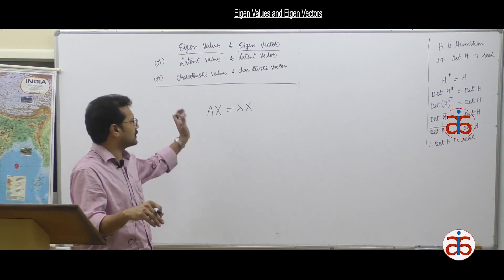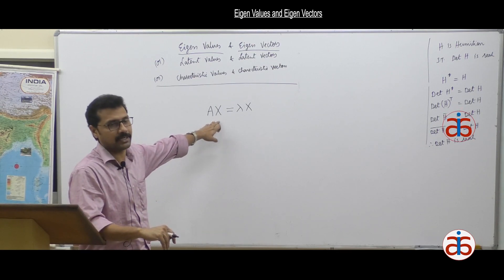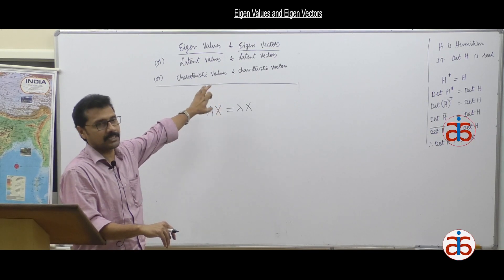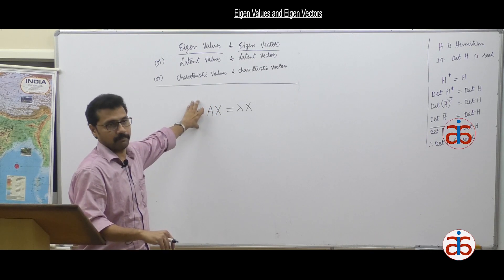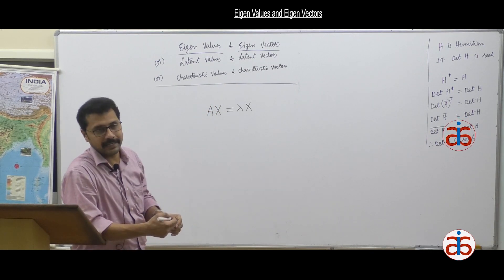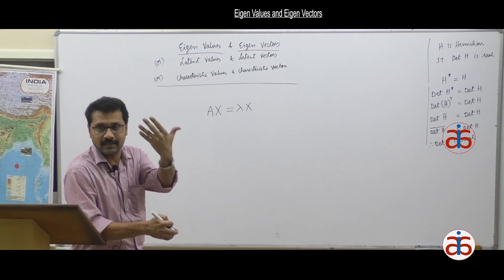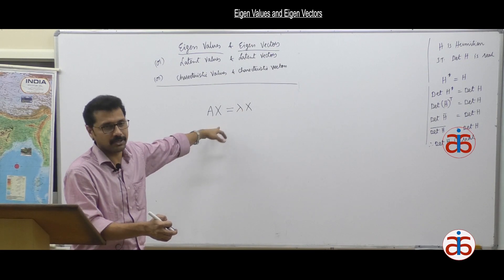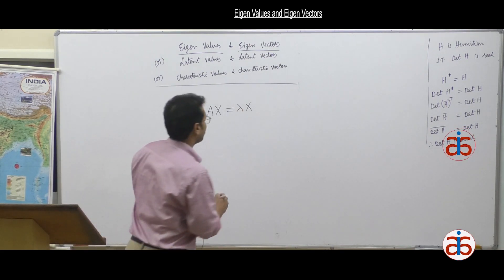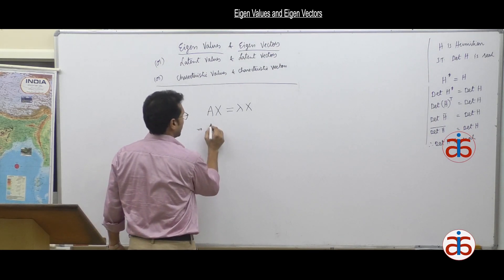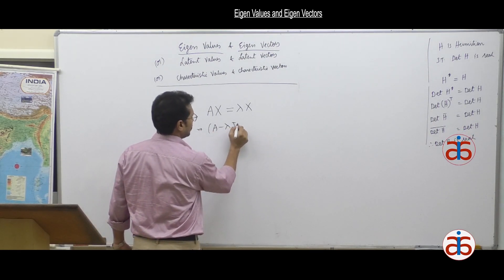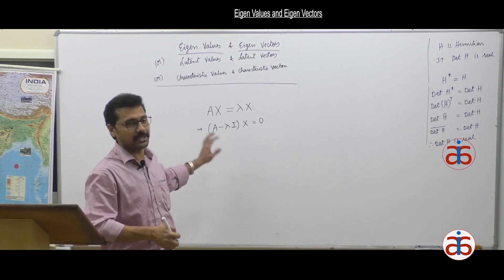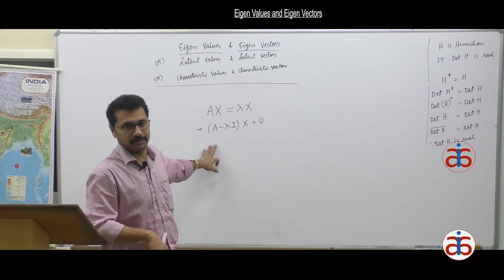For any given square matrix, if you can find vectors X such that Ax equals lambda x for some scalars lambda, that is the eigenvalue problem. This can also be written as (A minus lambda I) times x equals 0, which looks like a homogeneous system of linear equations.